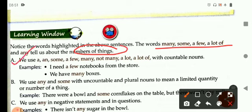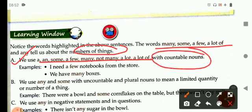We use a, an, some, a few, many, not many, a lot of, and a lot with countable nouns that can be counted. For example, I need a few books from the store. We have many boxes. So these are the countable nouns.